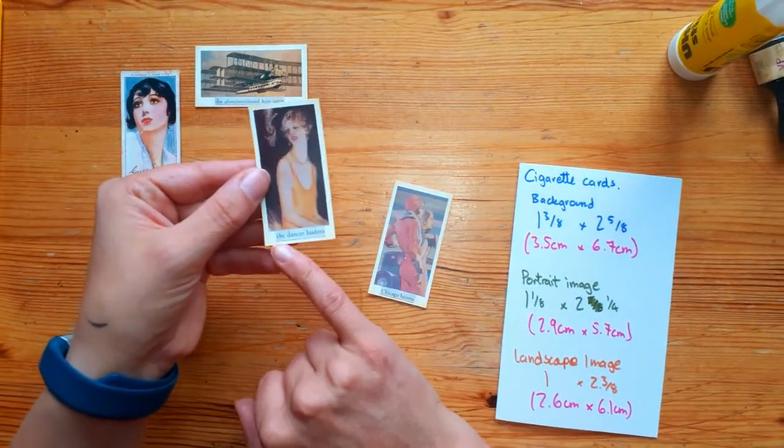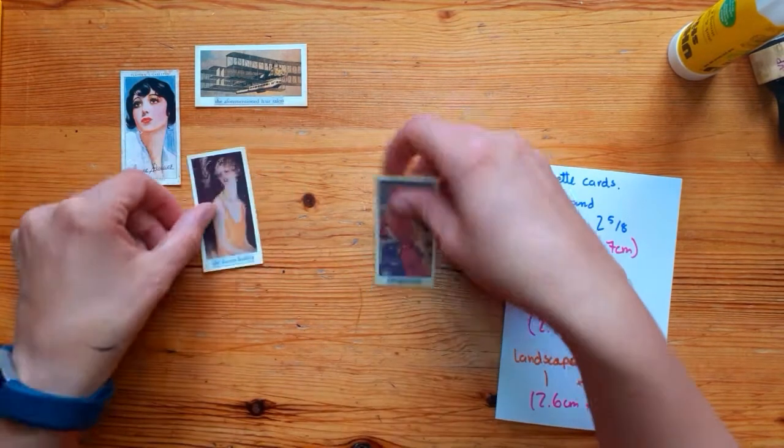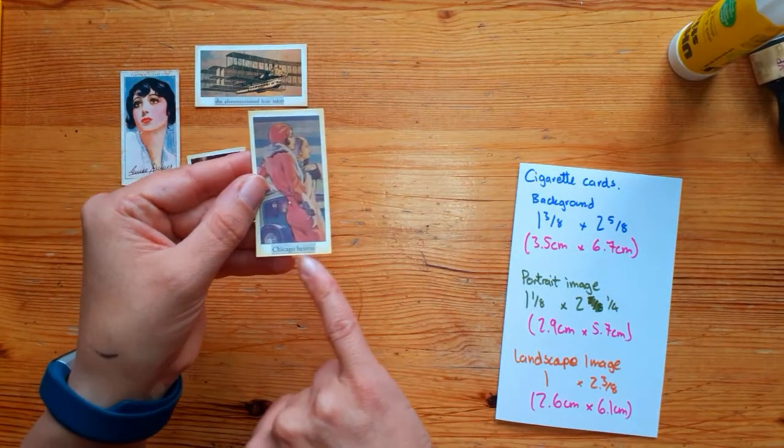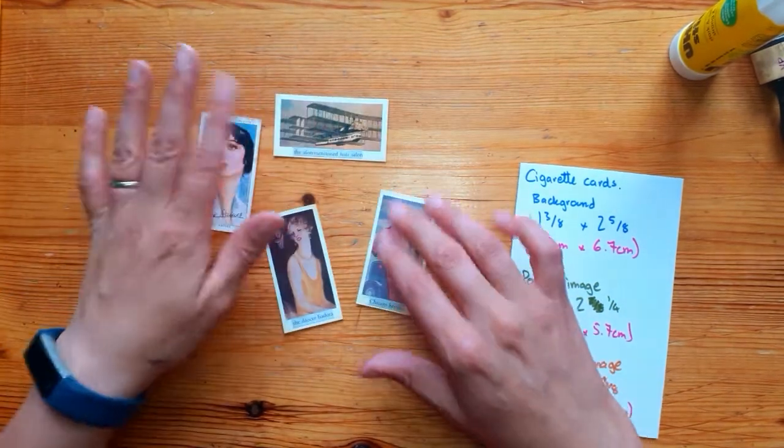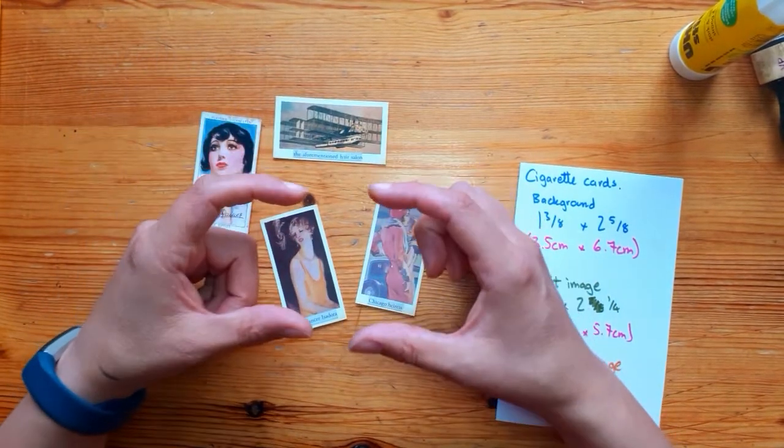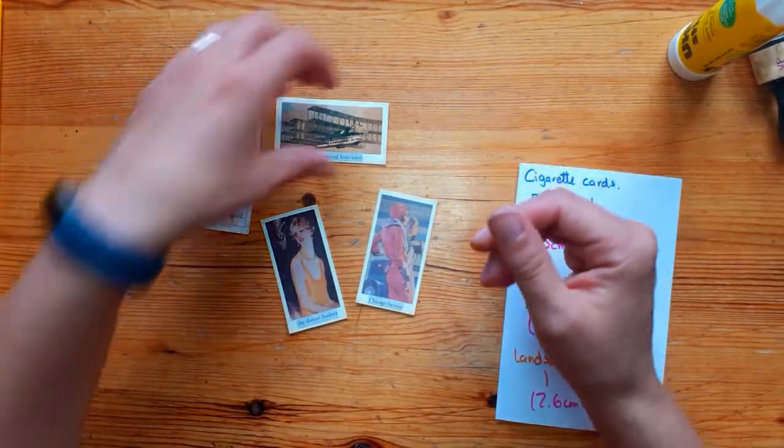So this one I've got 'the dancer Isadora' and that one I have 'Chicago Heiress.' And these were just little images I had that I wanted to do something with, but they were on scraps so I wasn't sure what to do with, and this has used them up perfectly.